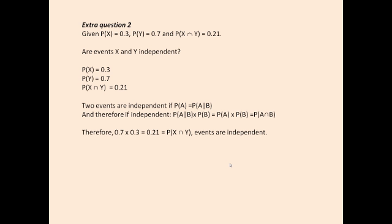The problem here is that in wanting to compare X and Y, we don't have the probability of X given Y or the probability of Y given X. So we don't have either of the conditional probabilities to compare to the marginal. We've got the joint probability of X and Y, so we have to think about how joint probabilities are linked to the question of independence and conditional probabilities, to see if we can rearrange the information we've got to come up with a conclusion.